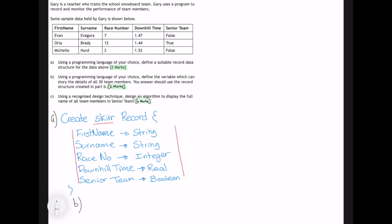Turning attention now to part B. We now need to define a variable which can show the details of all 30 members. Although the term variable is used, because we're storing 30 values, we know that a variable can only hold one single value. We're actually creating an array that's going to store the details of 30 team members. I'm going to call my array ski team. There's going to be 30 values within my array, and within the array, each value is going to be a skier.